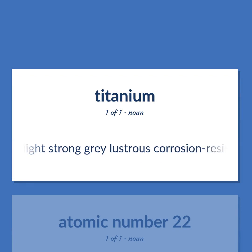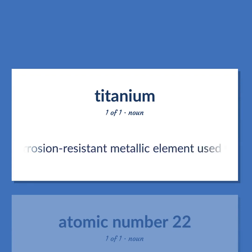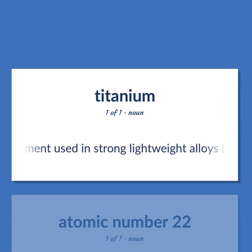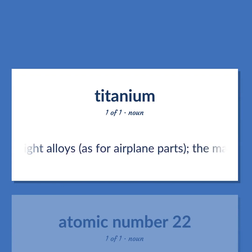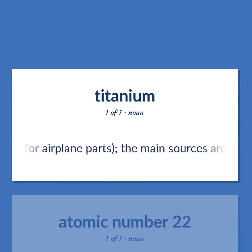A light, strong, gray, lustrous, corrosion-resistant metallic element used in strong lightweight alloys, as for airplane parts. The main sources are rutile and ilmenite.